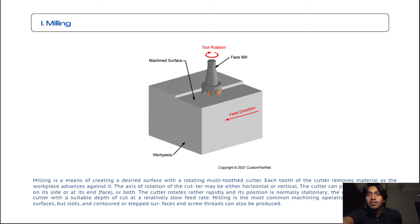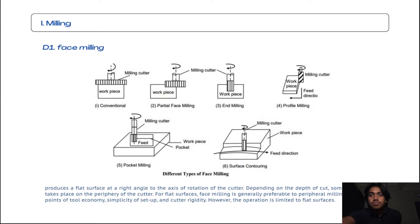First one is milling. Milling is a means of creating a desired surface with a rotating multitude cutter. Each tooth of the cutter removes material as the workpiece advances against it. The axis of rotation of the cutter may be either horizontal or vertical. The cutter can provide cutting action on its side or at its end face or both. The cutter rotates rather rapidly and its position is normally stationary. The work moves past the cutter with a suitable depth of cut at a relatively slow feed rate. Milling is the most common machining operation for producing flat surfaces.